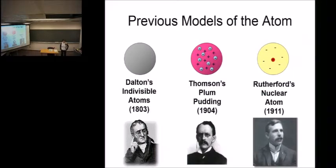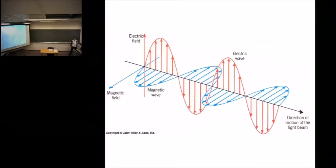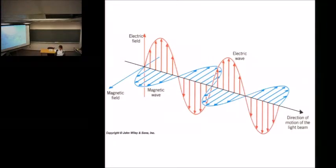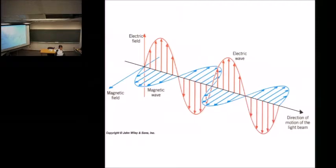You guys know light — it's energy, right? Light has no mass; it's not like a particle. Light is a form of energy, and we call that electromagnetic radiation. It's electromagnetic — an electric field and a magnetic field perpendicular to each other; one affects the other, combined together they form electromagnetic radiation. And light is a form of electromagnetic radiation. We say that light travels in waves.